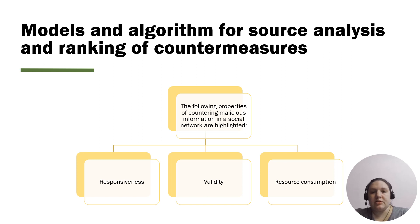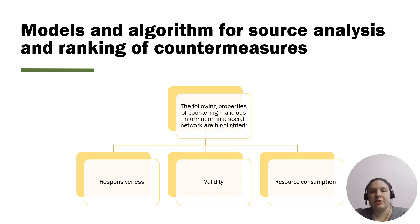The following properties of countermeasurement information in social networks are highlighted: responsiveness — the time it takes to counter measured information on social media; fidelity — the set of considered parameters of the selected objects of influence and countermeasurement in the process and counter directions; and source consumption — the probability that the amount of resources used will not exceed an acceptable value.